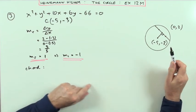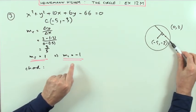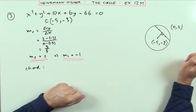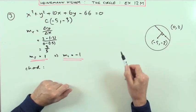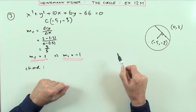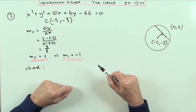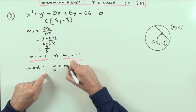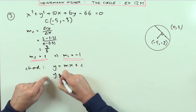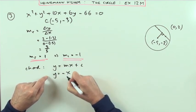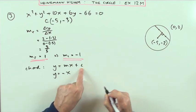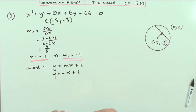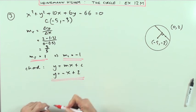This is a specific line, because I know where it cuts the y-axis. I don't need to apply the general form y minus b equals m times x minus a, because I know the y-intercept. So I can write straight away: y equals mx plus c. It has a gradient of negative one, so that's negative x, and it cuts the y-axis at 2. Therefore y equals negative x plus 2.